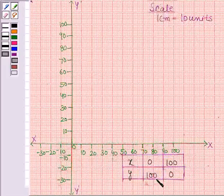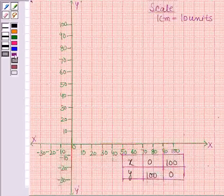Now the first solution is 0, 100. This means when abscissa is 0, then ordinate is 100. This means this is the required point 0, 100.